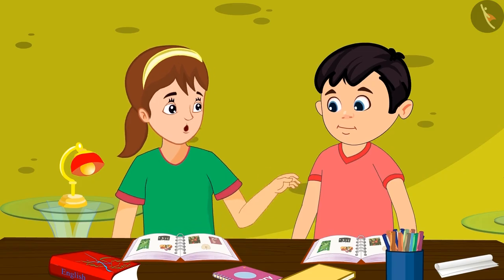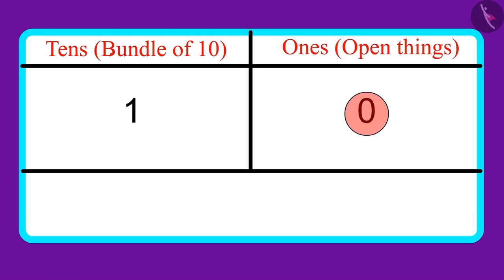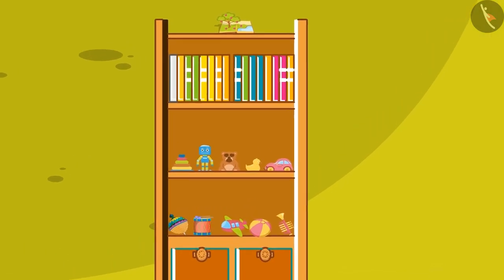This is wrong, Chotu. One tens and zero ones means you have just one toy, but there are many toys in the cupboard.